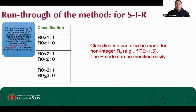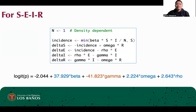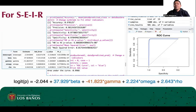Please take note that we can also set non-integer indicators. For the susceptible-exposed-infectious-recovered (SEIR) model, here is the derived logistic regression equation with parameter values as inputs to identify if R-naught is greater than 1 or less than 1. We can see that the performance metrics have good values.